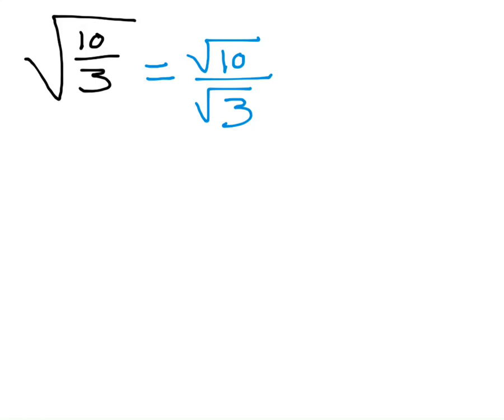But one other rule is that we don't want square roots in the denominator. So what we're going to do is called rationalizing the denominator — we're going to get rid of the square root in the denominator without changing the value of the problem. How we rationalize the denominator is we always multiply by the denominator over itself. If you multiply by something over itself, what are you really multiplying by? Anything divided by itself is one, so all I'm doing is multiplying by one. Anything times one is still itself, but this is going to help me get rid of the square root in the denominator.